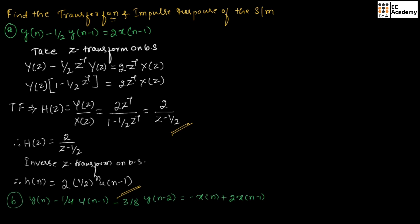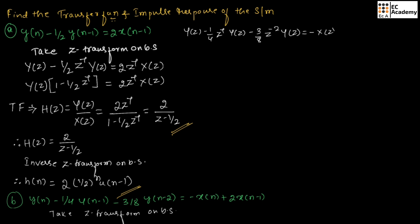Now let us consider the second problem. For this given difference equation, let us take Z-transform on both sides. We will get Y(z) minus 1/4 z⁻¹ Y(z) minus 3/8 z⁻² Y(z) equals minus X(z) plus 2z⁻¹ X(z). Let us take Y(z) common in this term. Therefore, Y(z) · (1 minus 1/4 z⁻¹ minus 3/8 z⁻²) equals...